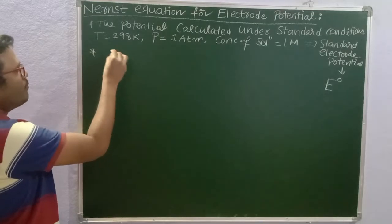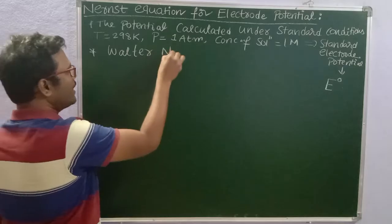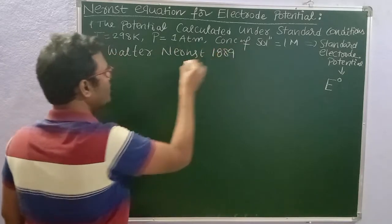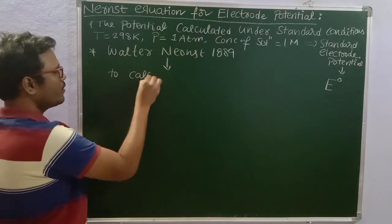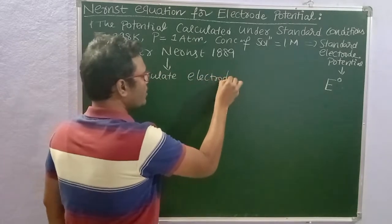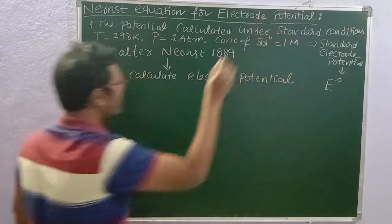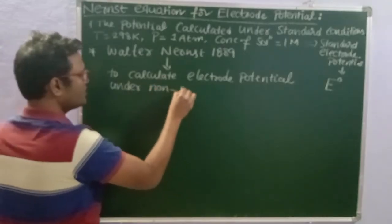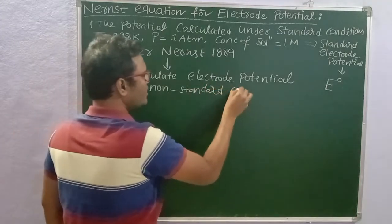The Nernst equation was given by the scientist Walter Nernst in the year 1889. His goal was to calculate electrode potential under non-standard conditions.